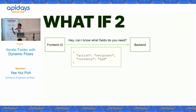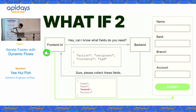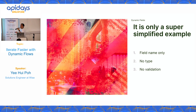Suppose there's a regulation change — a requirement that we now need to collect an additional field called branch. The front end still asks the same question to the back end, but this time the back end returns an additional field called branch. Because the form is generated dynamically, the front end is able to generate a new form that includes branch. All the required fields are collected and sent to WISE, and we are able to process that information.